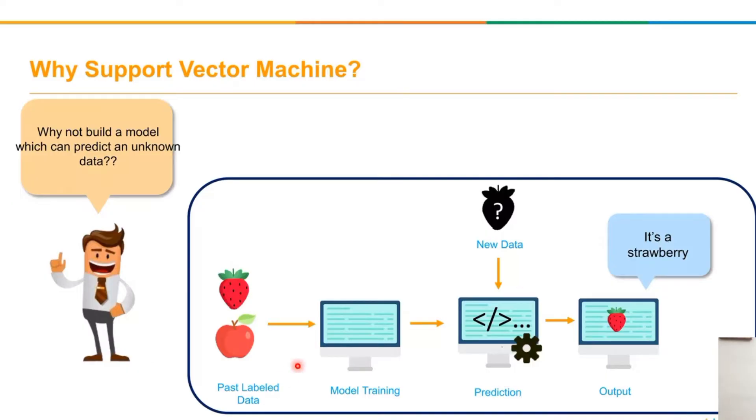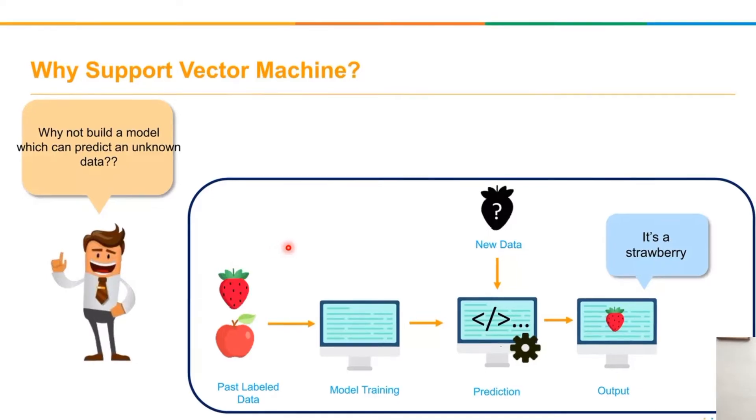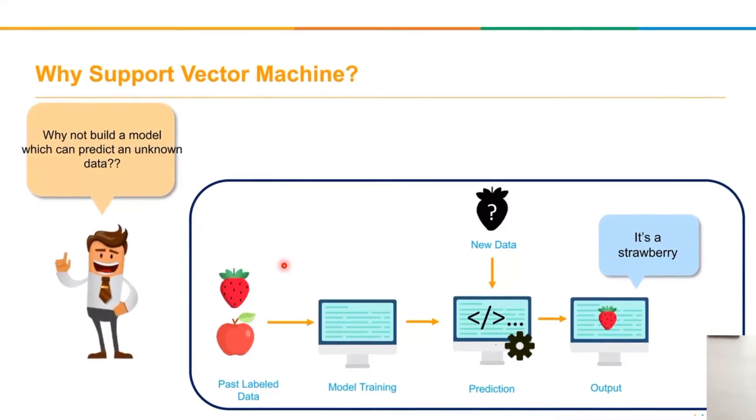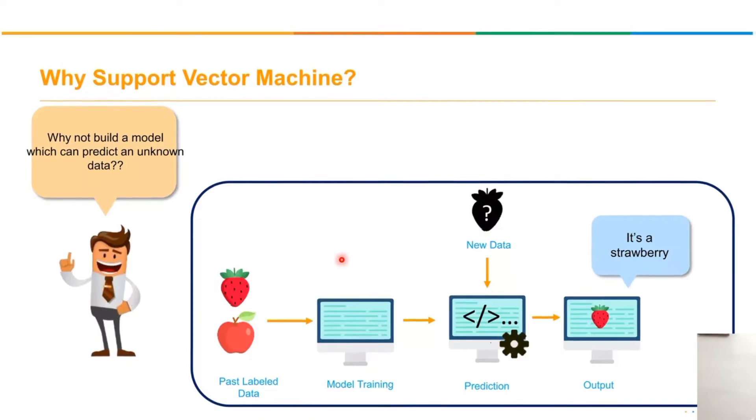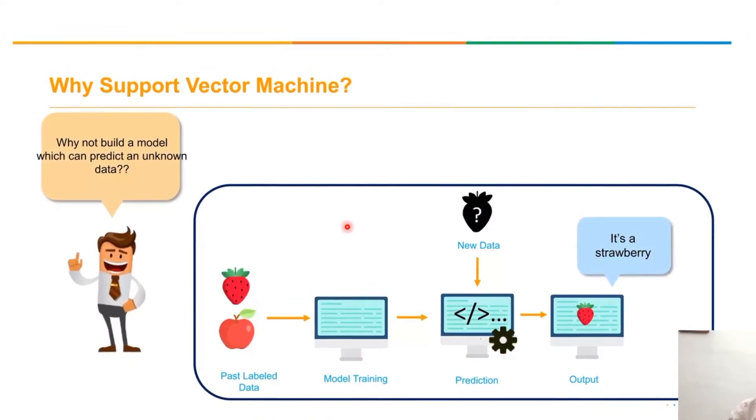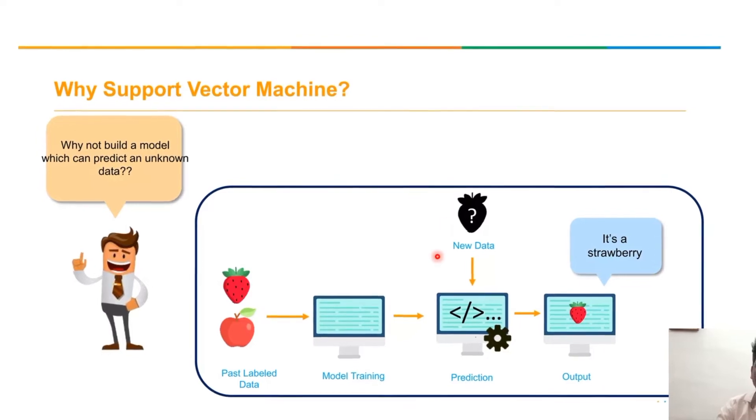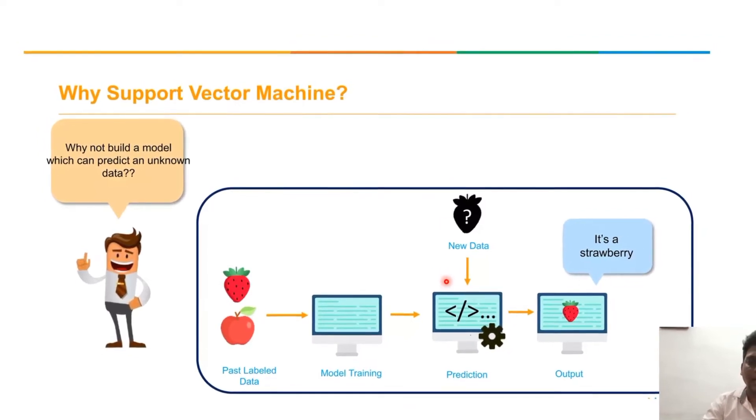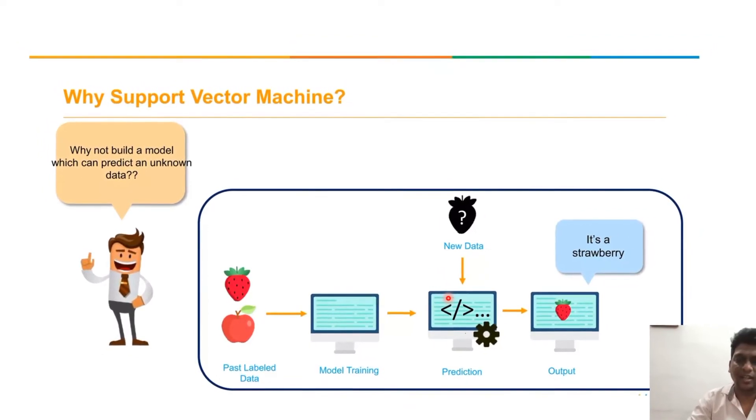As we already mentioned, this support vector machine is a labeled data method. So we train the model with the help of input labeled data. When new data is given, it correctly predicts whether the fruit is strawberry or apple.